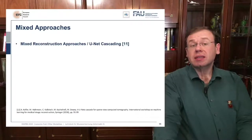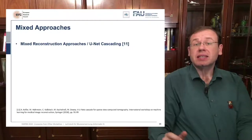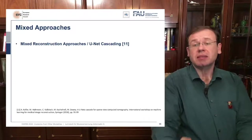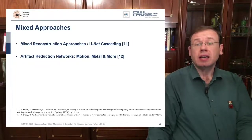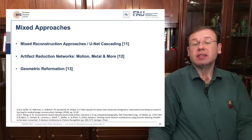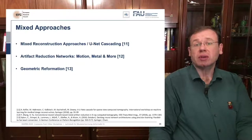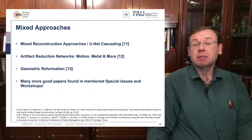There are also mixed approaches that combine deep learning ideas with data consistency steps. There is nice work by Haltmeyer and Kofler on UNIT cascading, and many more papers in this direction. There are artifact reduction networks for motion, metal, scatter, and beam hardening. There are also approaches considering geometric reformatting like learned trajectories — reference 13 is an example of a learned rebinning approach, and these ideas are now emerging in the MR community as well.